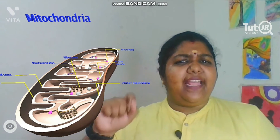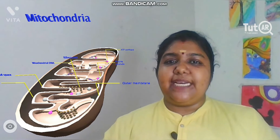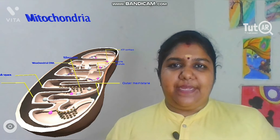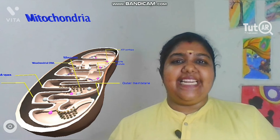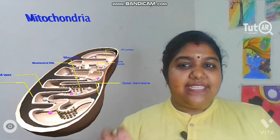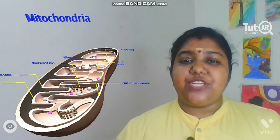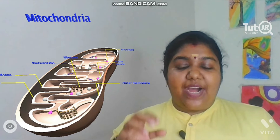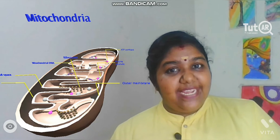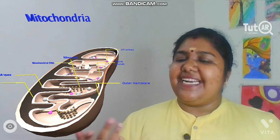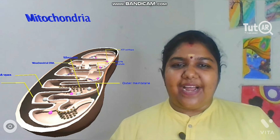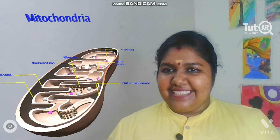The highly convoluted inner membrane helps mitochondria efficiently produce large amounts of ATP through the electron transport system (ETS). Therefore, the structure of mitochondria is very important. It is also unique because it has its own genetic material.